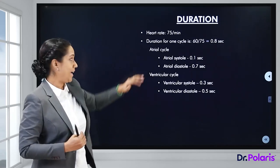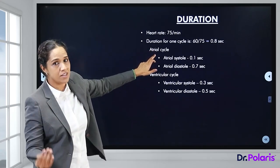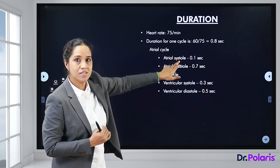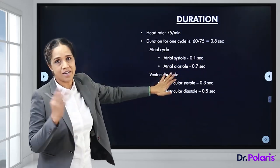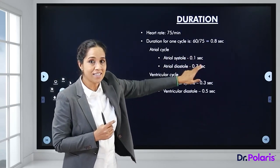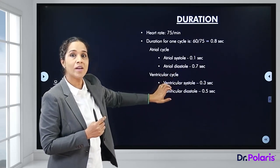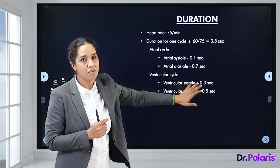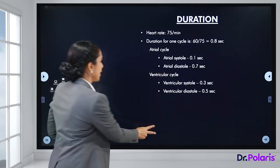The cardiac cycle is split into the atrial cycle and the ventricular cycle. The atrial cycle has atrial systole and atrial diastole; the ventricular cycle has ventricular systole and ventricular diastole. Atrial systole takes 0.1 seconds and atrial diastole takes 0.7 seconds. Ventricular systole takes 0.3 seconds and ventricular diastole takes 0.5 seconds — totalling 0.8 seconds.